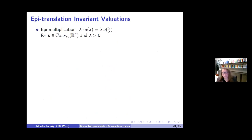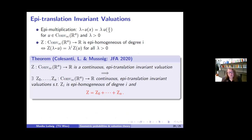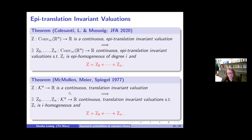On this space we have epi-multiplication, corresponding to multiplying the epigraph by a scalar. We say a function is epi-homogeneous of degree i if it satisfies the corresponding homogeneity relation. We can show that every continuous epi-translation invariant valuation on the space of super-coercive functions has a homogeneous decomposition: there are functionals Z₀ through Z_M such that Z = Σ Z_i and each Z_i is epi-homogeneous of degree i.